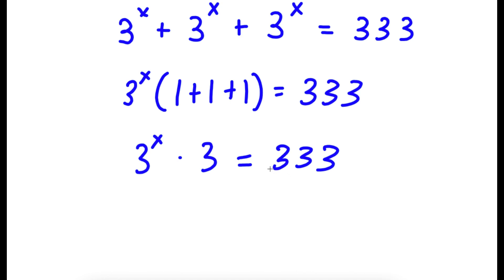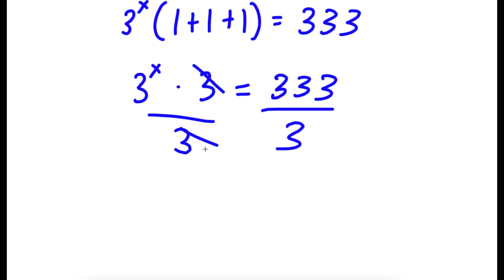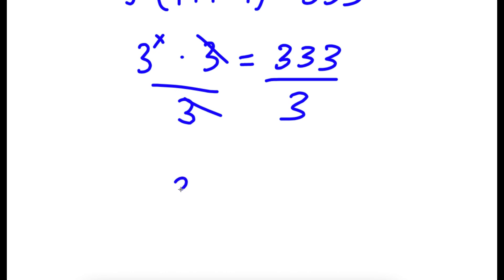From here, I'm going to divide both sides by 3. These two cancel out, and now I have 3 to the power of x is equal to 333 divided by 3, which is 111.